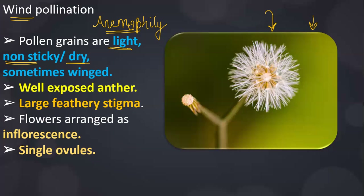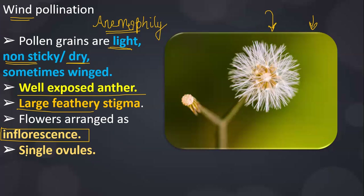Pollen grains in wind-pollinated flowers are light, non-sticky and dry. These wind-pollinated flowers have a well-exposed anther so that pollen grains get exposed to the wind. They have large feathery stigma, and the flowers are arranged as inflorescences. Most probably single ovules will be present.